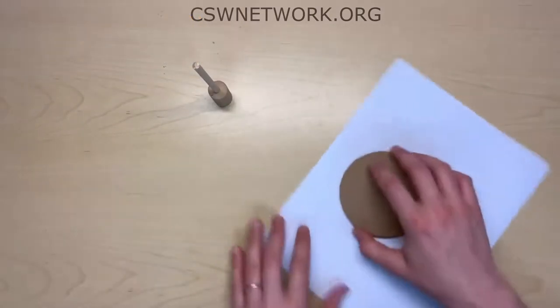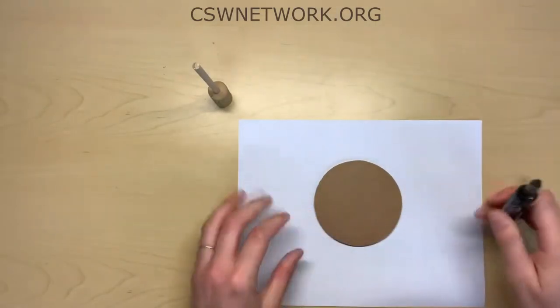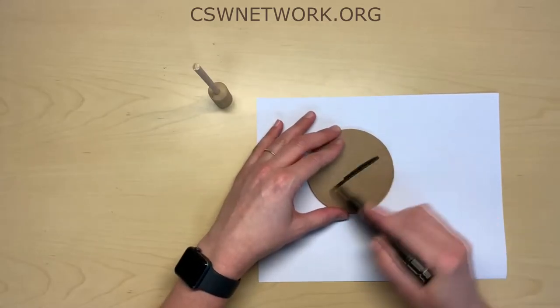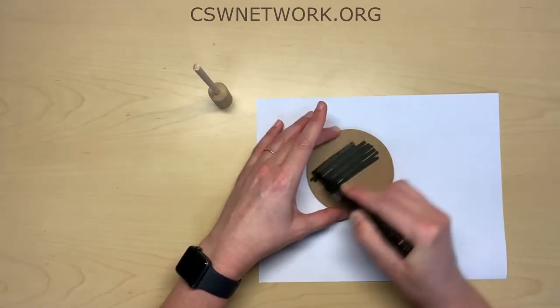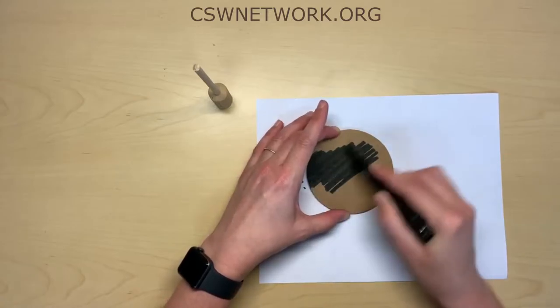We'll start the build by inserting the dowel completely inside the hole in the cork. Color the brown part of your cardboard circle completely black. Inserta la clavija completamente adentro del hoyo del corcho. Pinta al lado café del círculo de cartón todo negro.